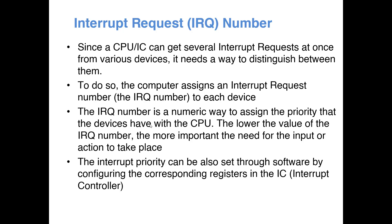In modern systems, IRQ number 0 is usually assigned to the system timer, which decides scheduling between the operating system and other software. IRQ number 1 is always assigned to the keyboard, because keyboard interrupts are very frequent and very time-critical. So these numbers convey the priority of the interrupt signal, and the processor or PIC uses this to determine the corresponding interrupt service routine to run and finds its starting address from the interrupt vector table.